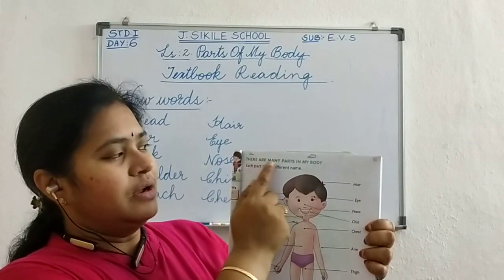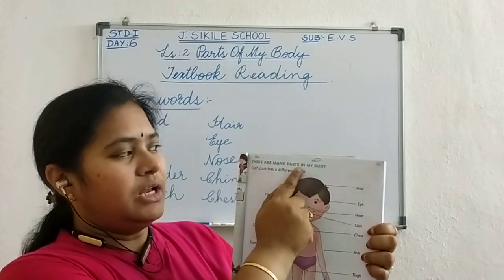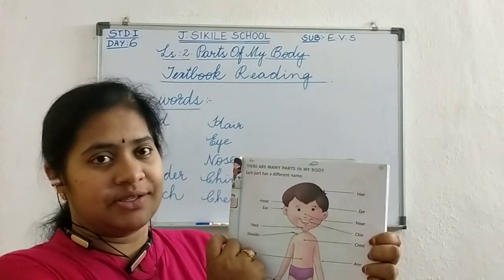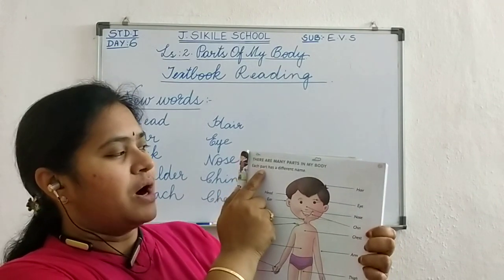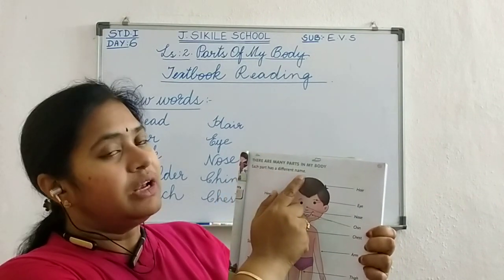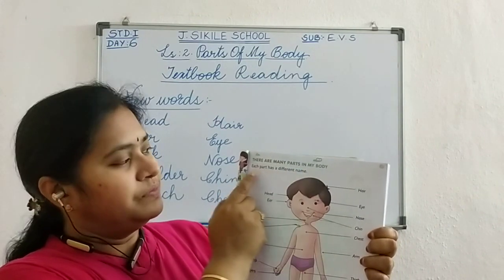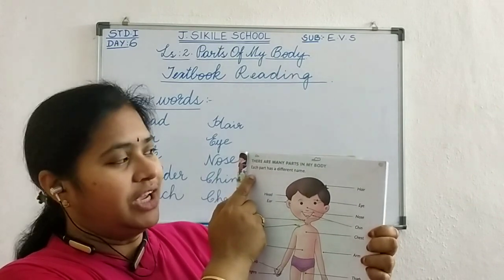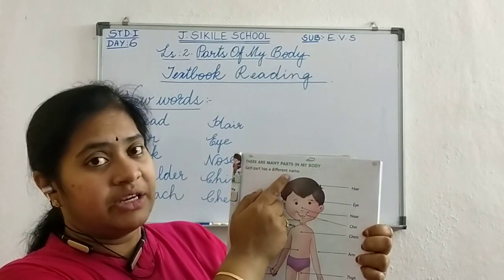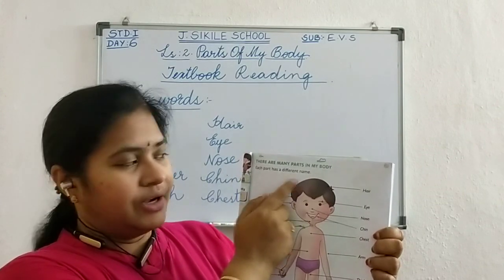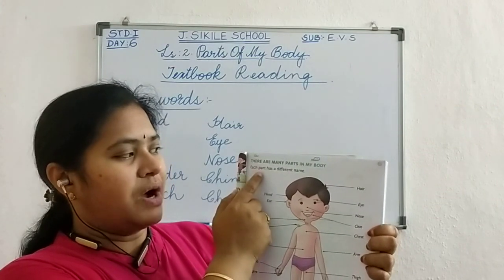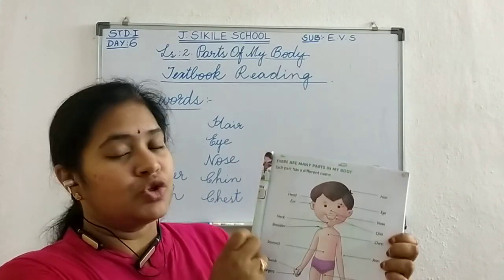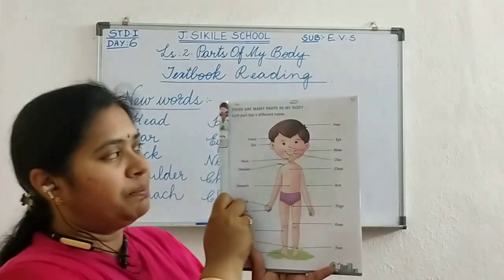There are many parts in my body — you have to read like this. Each part has a different name. E-A-C-H. Each. D-I-F-F-E-R-E-N-T. Different. Each part has a different name. So what are the different names of the body parts?